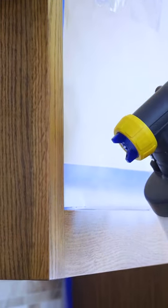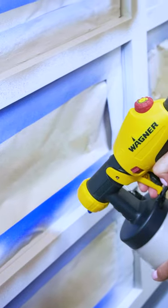Now we're ready to start priming the cabinets. We're going to start with the upper cabinets and then move to the lowers and then spray a second topcoat.